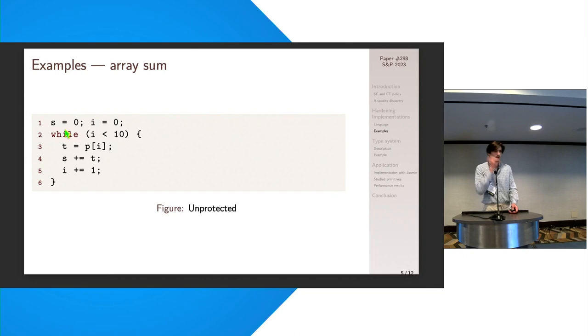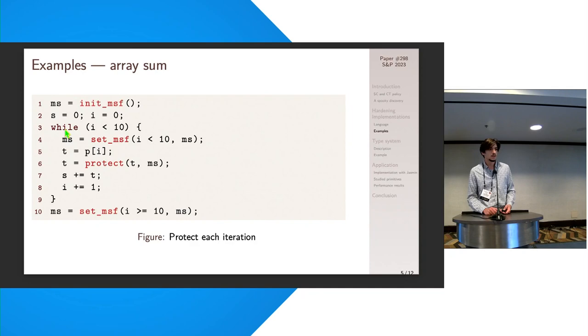So let's take a small example with an array sum, so an array P in memory, and we want to sum all of its values. This is quite straightforward code. And systematic protection with the LLVM compiler, for instance, would consist in adding the following instructions. So at every branch of the while instruction, which is basically a loop with branches, we update the misspeculation flag, making sure that we're not misspeculating. And then upon retrieving the value P from memory into register T, we protect it.